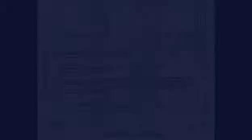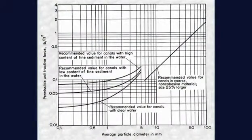The permissible tractive stress is the maximum shear stress that will not cause erosion on a level surface. This value, obtained from laboratory experiments, is called the critical tractive stress. This figure shows critical tractive stresses for non-cohesive materials as a function of particle size, with the sand size materials shown to the left and the gravel size materials to the right.